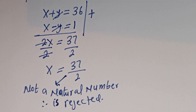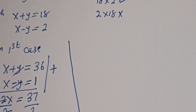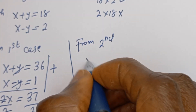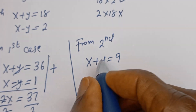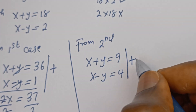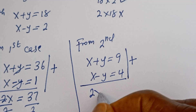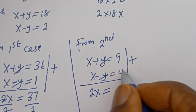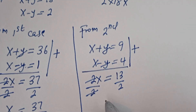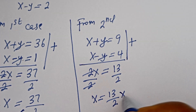Now let's consider the second case. From the second case, we have x plus y is equal to 9, and x minus y is equal to 4. Solving simultaneously, 2x is equal to 13, so x is equal to 13 divided by 2. This is not a natural number, so this is rejected.